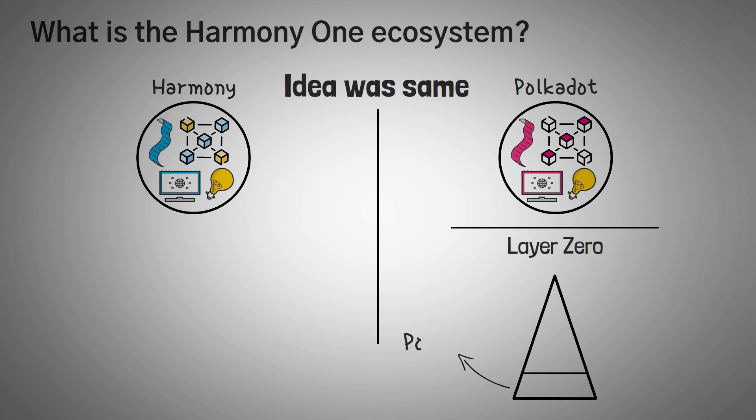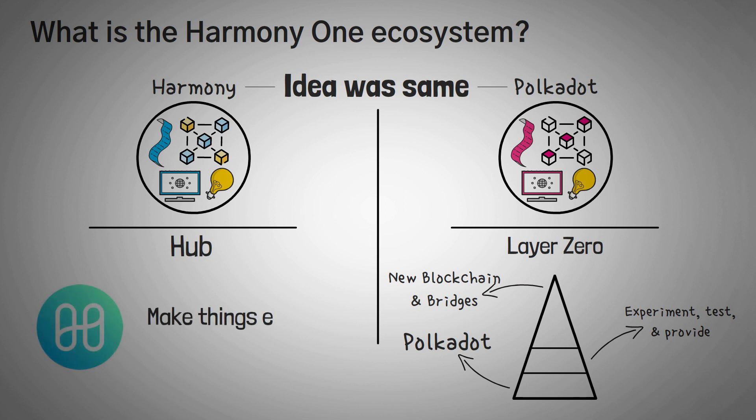Polkadot describes itself as a layer zero blockchain, letting people experiment and test, and provide intuitive ways to create blockchains and blockchain bridges. Harmony is not really a layer at all, but more of a hub. And because Harmony 1's goal is to make things easier and more usable in the crypto space, they focus on mostly creating bridges between different blockchains.